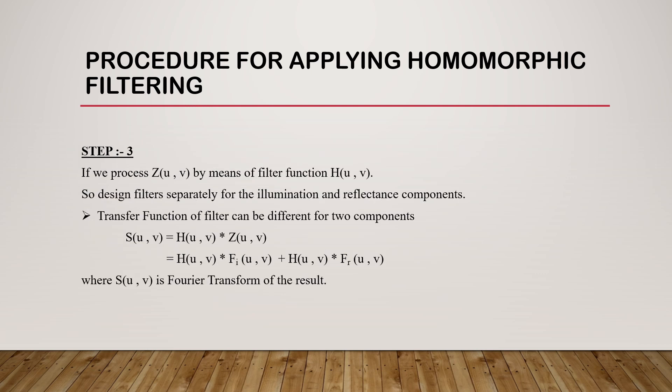And step 3 will be processing Z(u,v) by means of filter function H(u,v). So design filters separately for the illumination and reflectance components. Transfer function of filters can be different for two components, which is S(u,v) = H(u,v) * Z(u,v) which is equal to H(u,v) * Fi(u,v) + H(u,v) * Fr(u,v), where S(u,v) is the Fourier transform of the result.